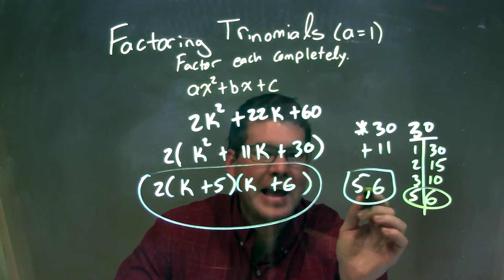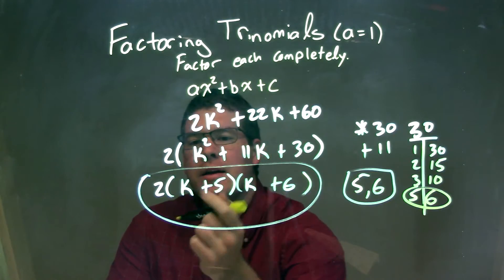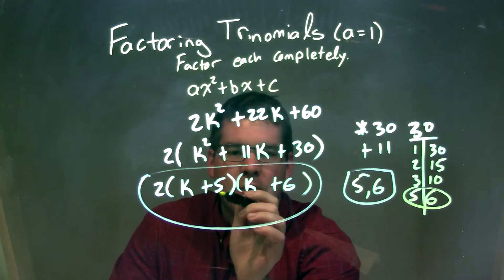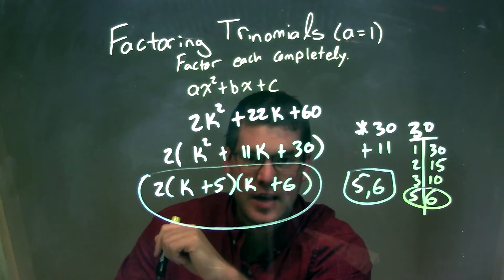5 times 6 multiplied to 30, but they added to be 11. So when I factor this out, I have 2 times k plus 5 times k plus 6 as our final answer.